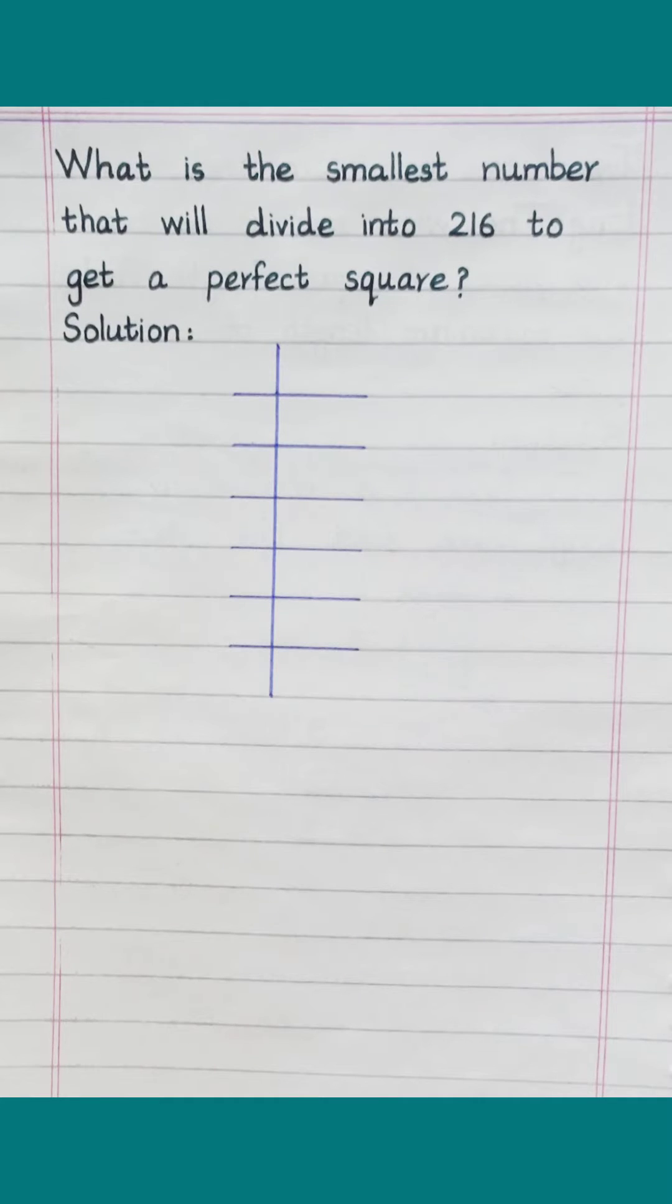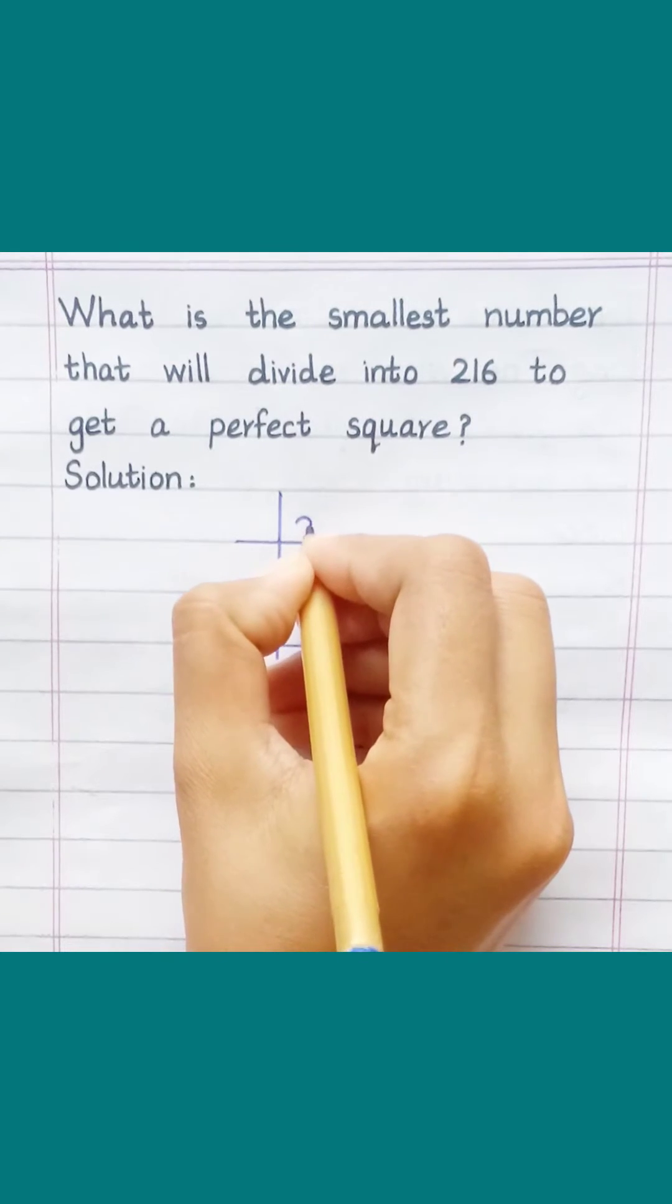What is the smallest number that will divide into 216 to get a perfect square? Solution: We start with 216.